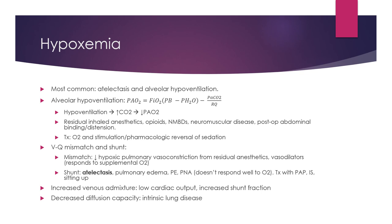As PaCO2 increases, PaO2 decreases. In a hypoventilating patient, doubling CO2 from 40 to 80 can drop PaO2 from 100 to about 50 — a significant decrease. To treat this, you can give oxygen, provide stimulation, or use pharmacological reversal of sedation to stimulate breathing. Patient-specific factors like pre-existing neuromuscular disease, abdominal binders, or abdominal distension can also impair ventilatory response post-op.